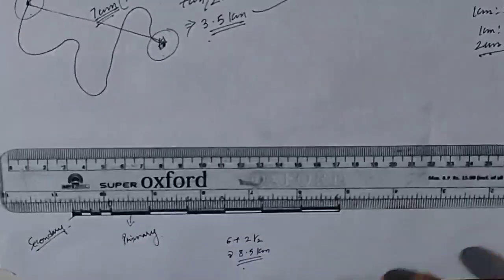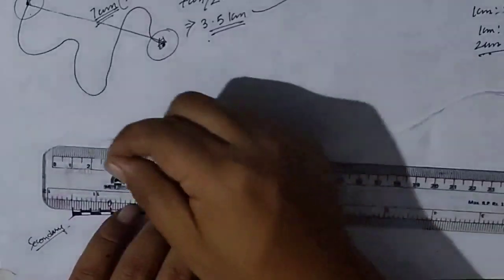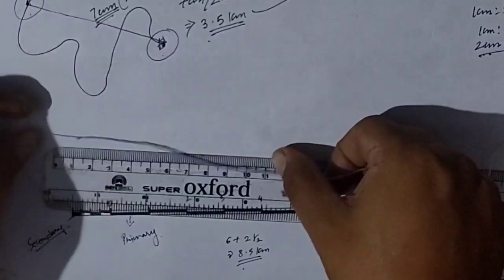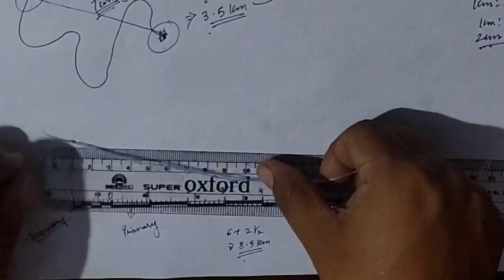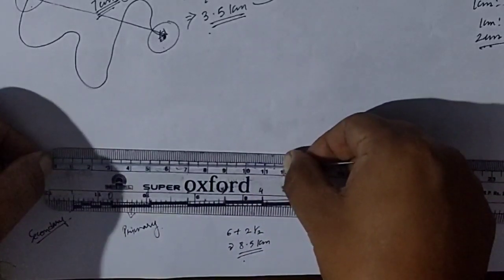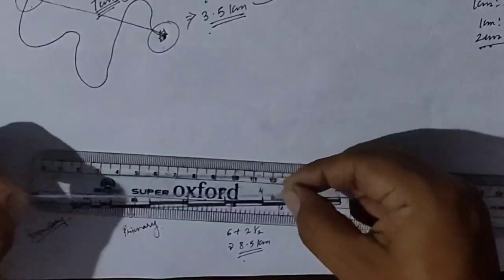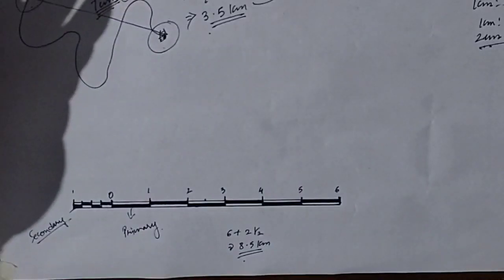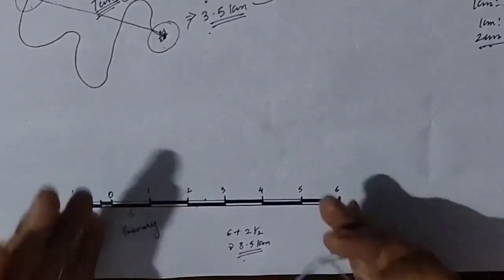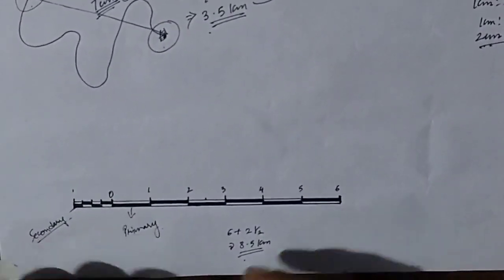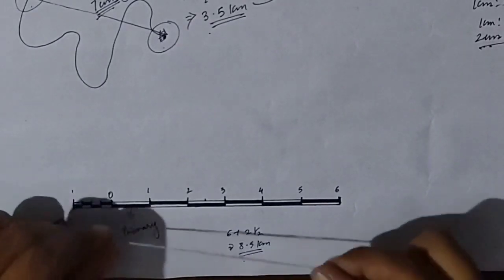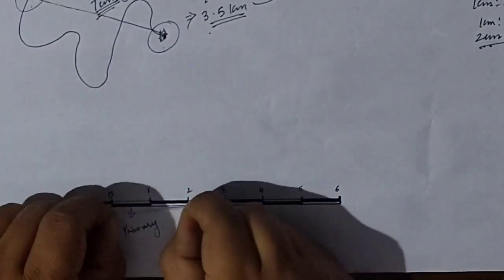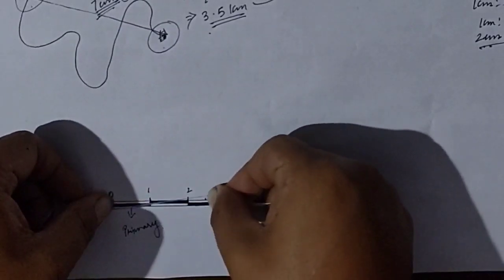Alternatively, you can measure the thread using a ruler scale. Place the thread from zero on the scale — say, it comes to 12 centimeters. Divide 12 centimeters by 2, and the result is the ground distance in kilometers. This is another way to use the linear scale to calculate distance when a ruler is not available. Here, from zero the measurement was just over 6, and from zero again it was a little more than 2.5.